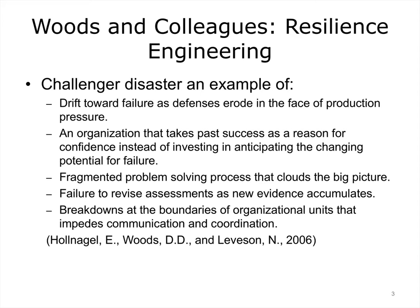Other fields have methods of designing for safety. David Woods and colleagues described the Space Shuttle Challenger disaster as an example of how major errors happen. This includes a drift toward failure as defenses and regular procedures erode as production pressure — sticking to the schedule — increases. Taking past success as a reason for undue confidence instead of continuing to anticipate and examine points where failures could occur. New evidence accumulated, but assessments were not revised. Communication and coordination broke down between organizational units.